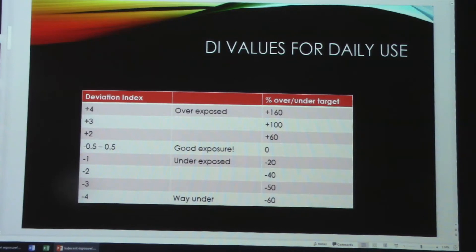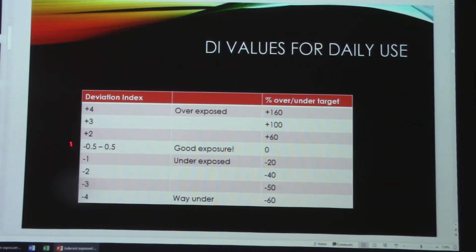Here are some DI values you can use. If you've got a deviation index of negative 0.5 to positive 0.5, that's a good exposure — your exposure index and target index are right where they're supposed to be. A deviation index of 2 means you are about 60% overexposed. A deviation index of 3 means you had twice too much exposure — 100% over your target. And a deviation index of 4 means you're about 160% overexposed. You can quickly figure this out by raising 10 to the 0.2, 0.3, or 0.4 and seeing what those numbers look like.